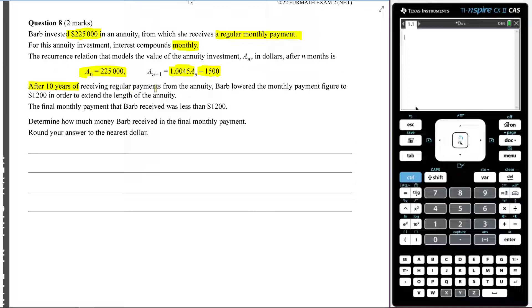After 10 years of receiving regular payments from the annuity, Barb lowered the monthly payment figure to $1,200 in order to extend the length of the annuity. So in other words, after 10 years, Barb says, you know what? I'm no longer going to take out $1,500 to live off. I'm only going to take out $1,200 to live off, and that's going to extend the length of the annuity.